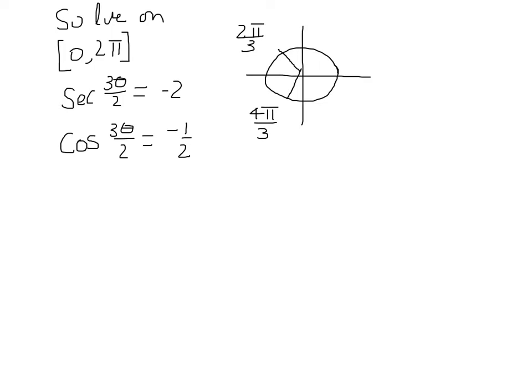And then looking at the unit circle, we know that that happens at 2 pi over 3 or 4 pi over 3, and you can check the table that we filled out to find that also.